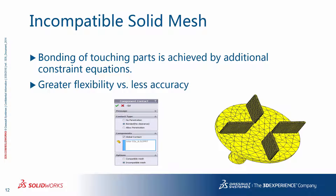Alternatively, you can use an incompatible solid mesh. That gives you greater flexibility to mesh parts independently — perhaps very fine on one and a very coarse mesh on the other next to it. Bonding of touching parts is achieved by additional internal constraint equations. The result is that stresses will be less accurate around the interface region compared with a compatible solid mesh.